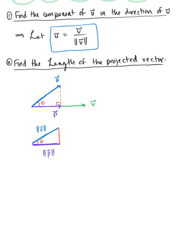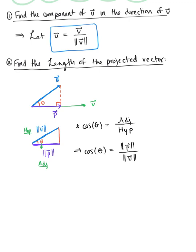Since the hypotenuse comes from vector u, it has a length defined as the magnitude of vector u. Since the base of our triangle comes from the projected vector p, its length is simply the magnitude of vector p. Using right triangle trig, we ask: what trig function relates the adjacent side and hypotenuse? Cosine — cosine of theta is adjacent over hypotenuse. Therefore, cosine of theta equals the magnitude of vector p divided by the magnitude of vector u. Solving for the magnitude of vector p, we get the magnitude of vector u multiplied by cosine of theta.